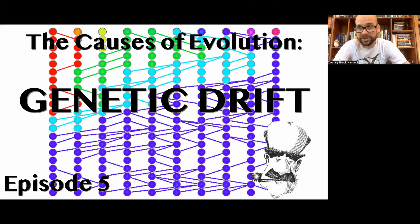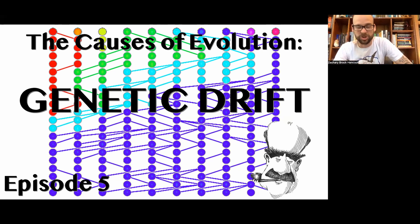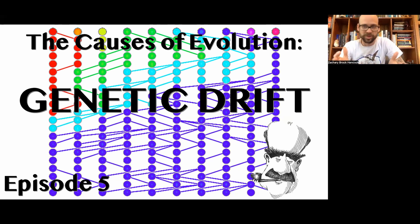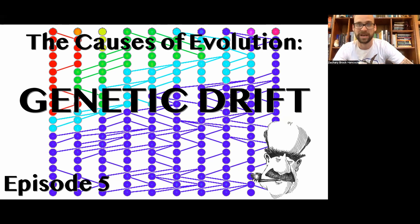Hello everyone, welcome back to the channel. If you're new here, I'm Zach Hancock. I'm an evolutionary biologist who specializes in population genetics, phylogenetics, and genome evolution. This is the fifth episode of the Causes of Evolution series, my ongoing series where we look at the quantitative aspects of evolutionary theory and try to derive all of the mechanisms and evolutionary forces from first principles in mathematics.